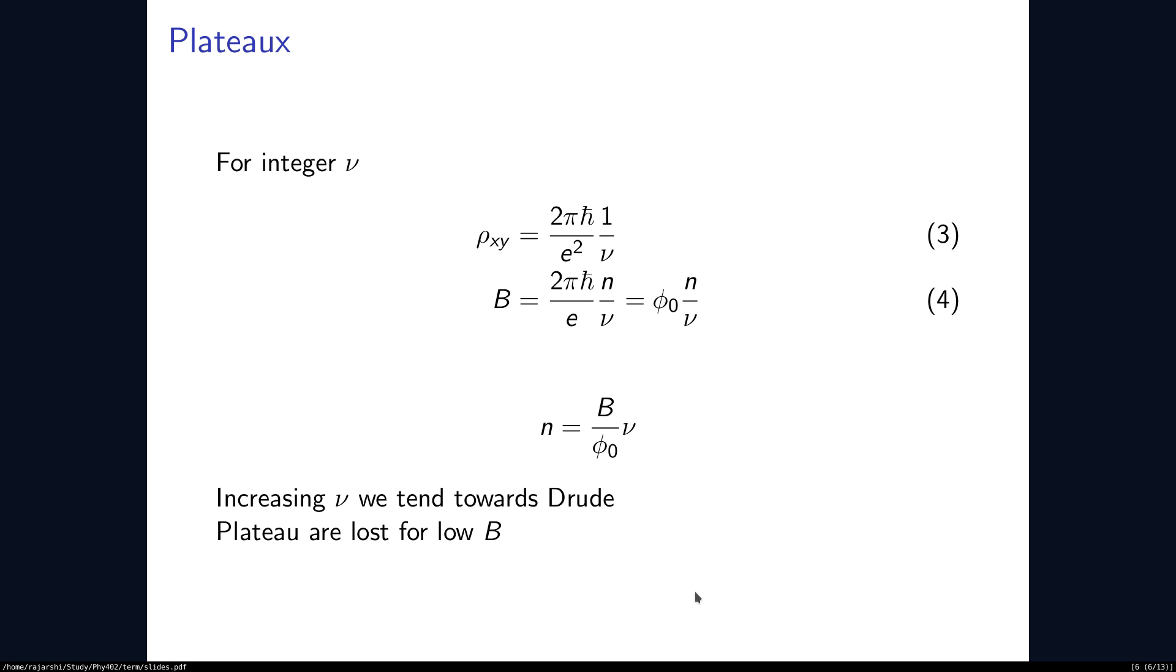The differences in rho and B become very small and rho and B become continuous and they are proportional. That is what is proposed by, that is what is predicted by the Drude model.